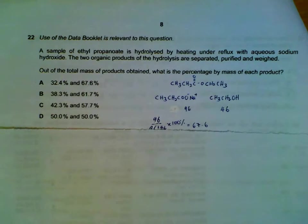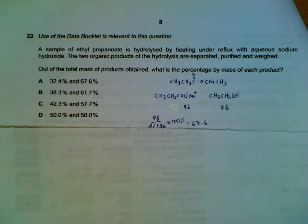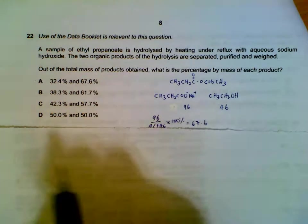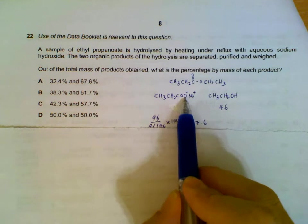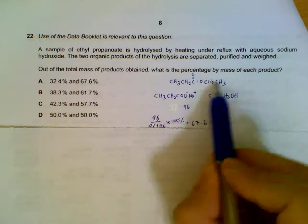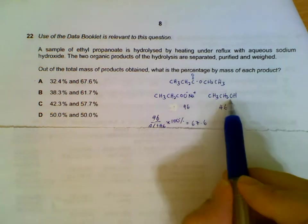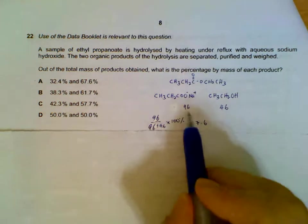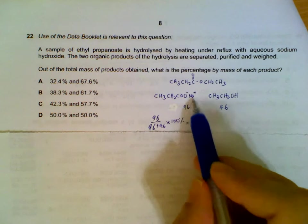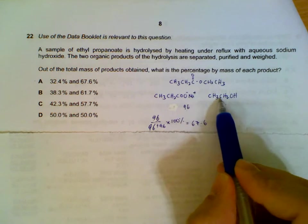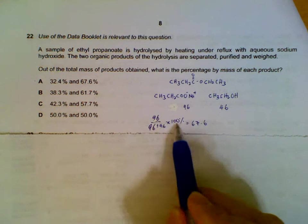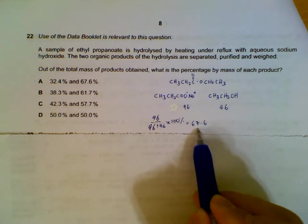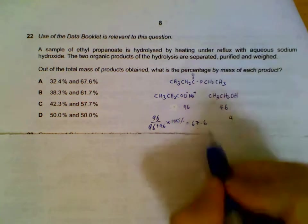Question 22: ethyl propanoate hydrolyzed under alkali reflux. We will get two organic products. The first organic product will be your propanoate salt because it's alkali conditions. Your second one will be your ethanol. What's the mass of each product percentage? So we use the Mr 96 including the sodium here, 46 for your ethanol. So percentage for your propanoate will be 96 out of 96 plus 46 times 100, so 67.6%. The other one you can calculate or you can take 100 minus 67.6%. So we have these two combinations.